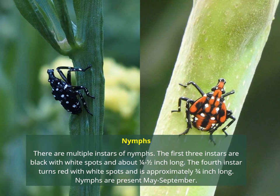There are a few different nymph stages called instars. The first three instars look like the photo on the left — they're black with white spots, about a quarter to half an inch long. Once they reach the fourth instar, they will start to turn red with black and white spots, and are about three quarters of an inch long. These nymphs will be present between May and September.